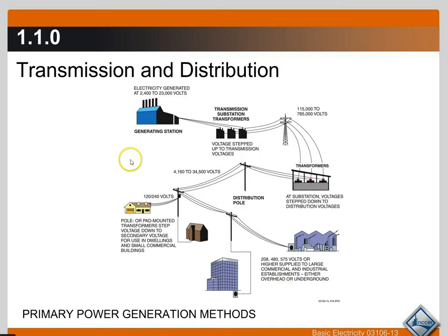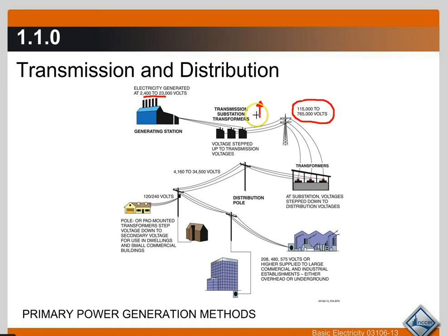So we take our primary generators — we have those windings turning inside of the magnetic lines of force — and it starts out, depending on how it's generated, between 2,400 and 23,000 volts. It goes to a substation sitting right near the generating station, and it goes through transformers which step that voltage up to a higher voltage so that they can transmit this electrical power through miles and miles of wire. They step it up considerably — from 100,000 up to almost a million volts, depending on the design and the length of the transmission wires.